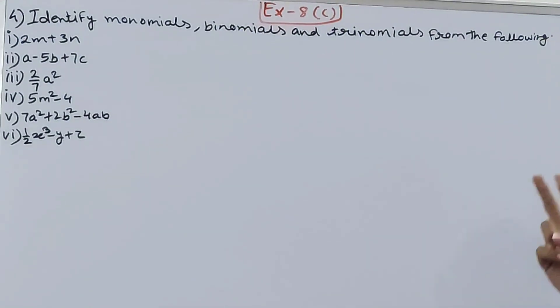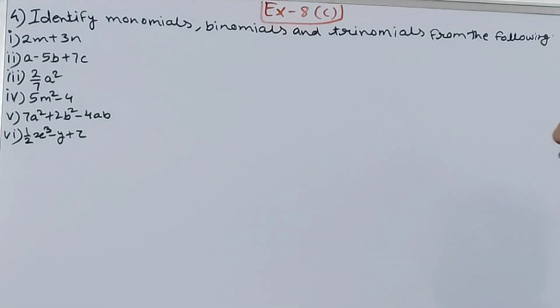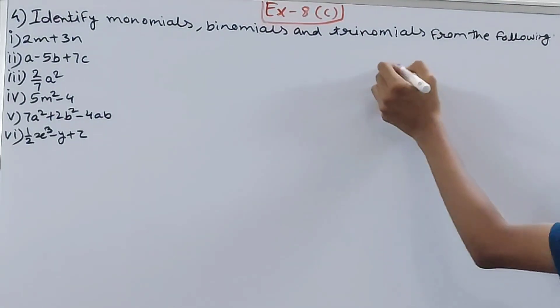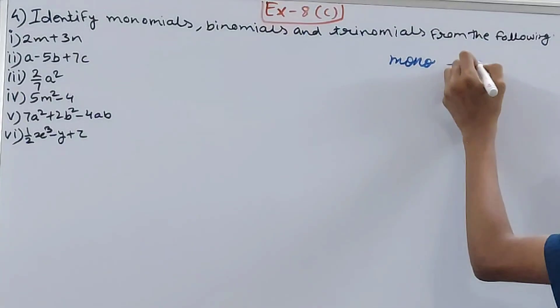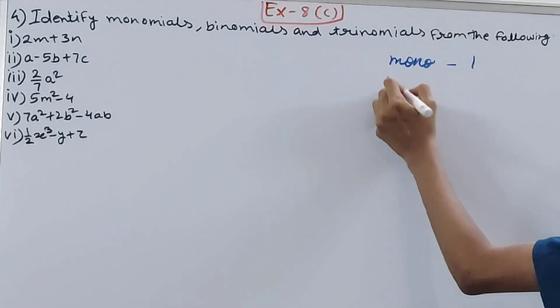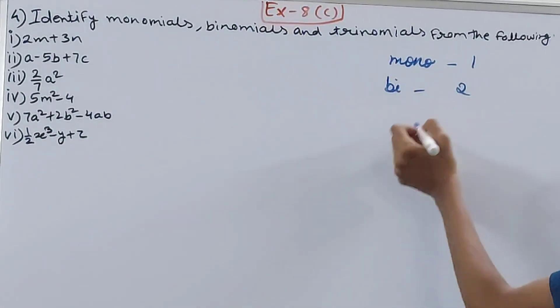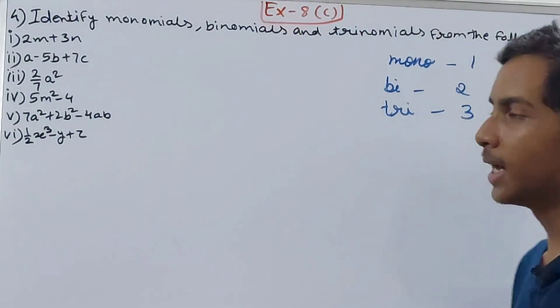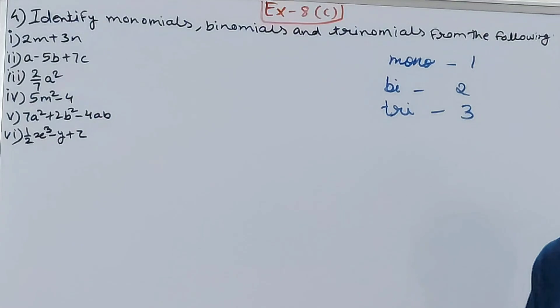Identify monomials, binomials, and trinomials from the following. Monomials have one term - mono means one. Binomials have two terms, whereas trinomials have three terms. Terms are separated by plus and minus signs.